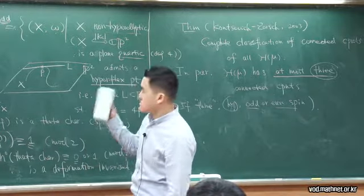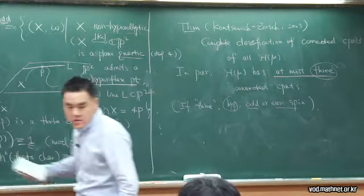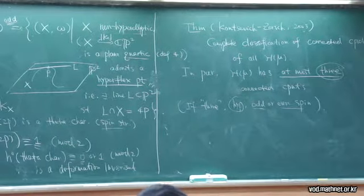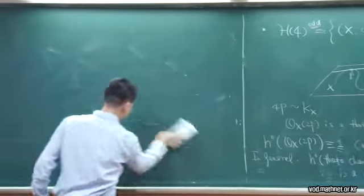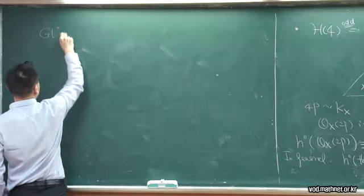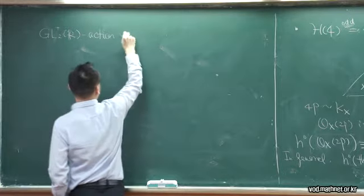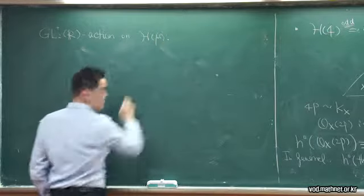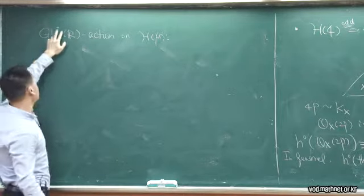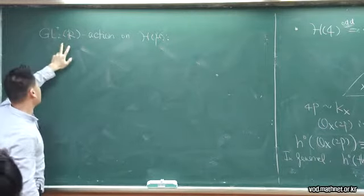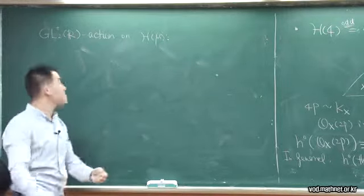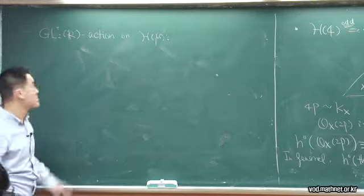There is another thing I mentioned earlier — the so-called GL₂ action. Let me get to that point. This is a group of 2×2 matrices with real entries, and the + means I consider the determinant to be positive. If the determinant is negative, this group becomes disconnected. So let's take the one component consisting of positive determinant — just 2×2 real matrices with positive determinant.